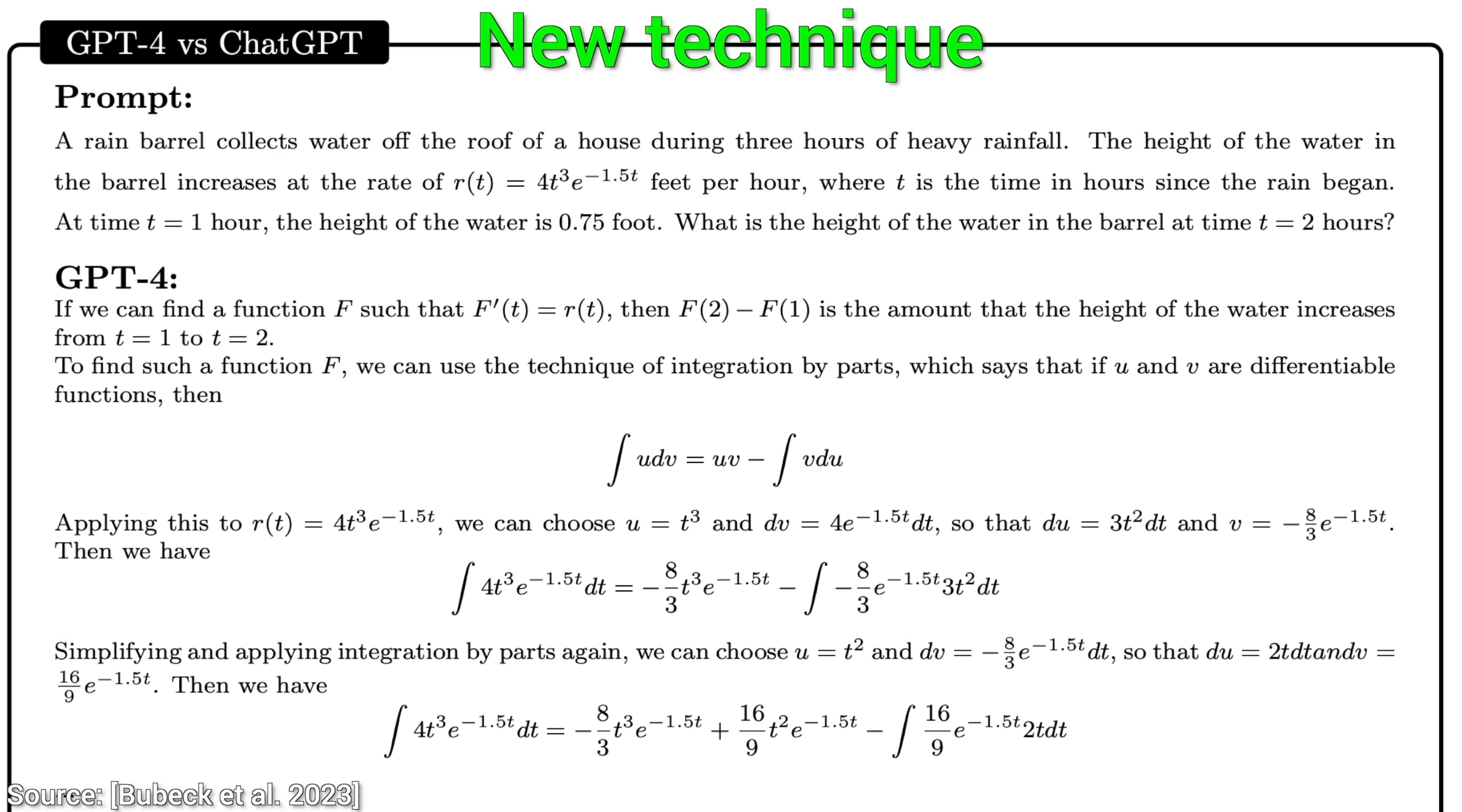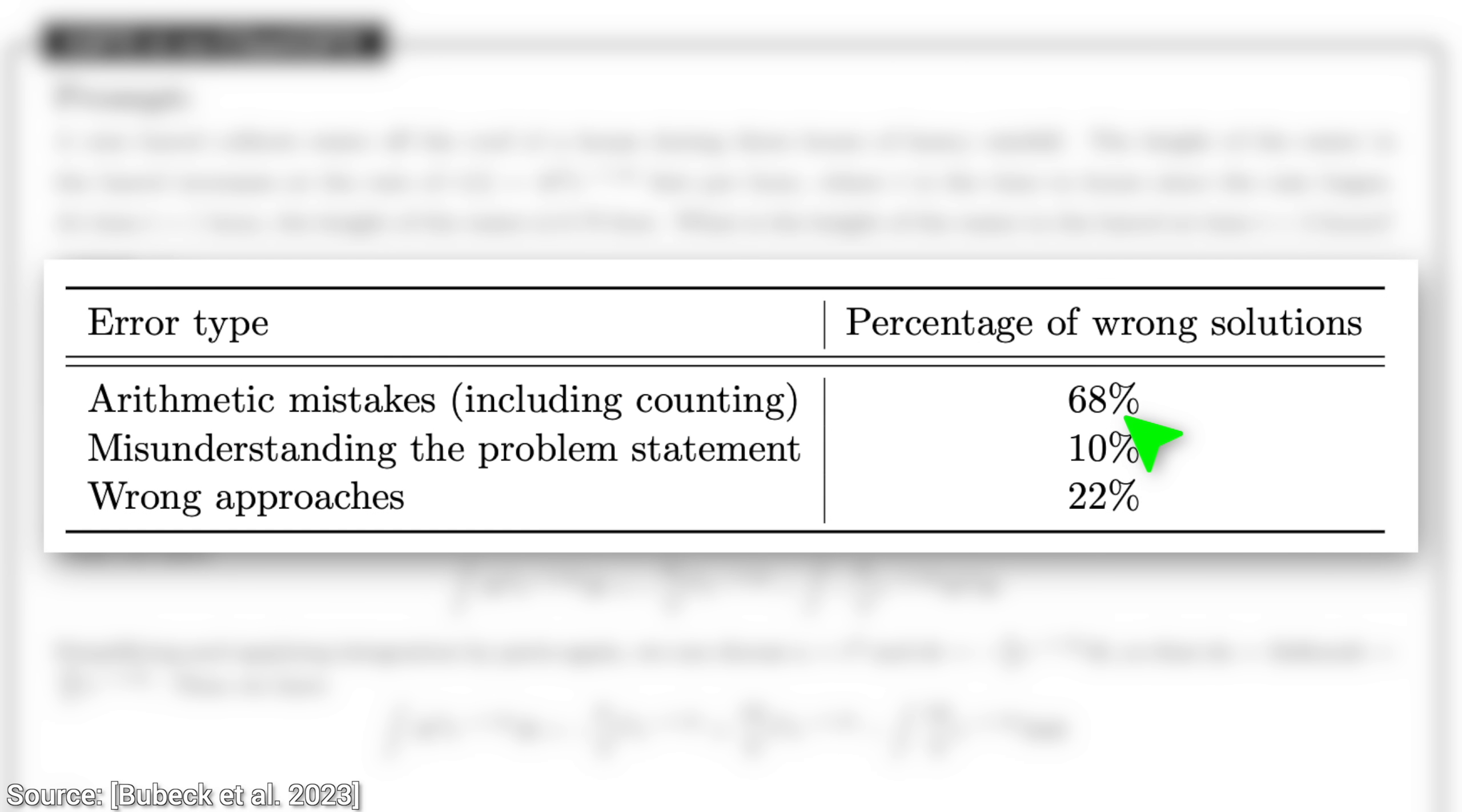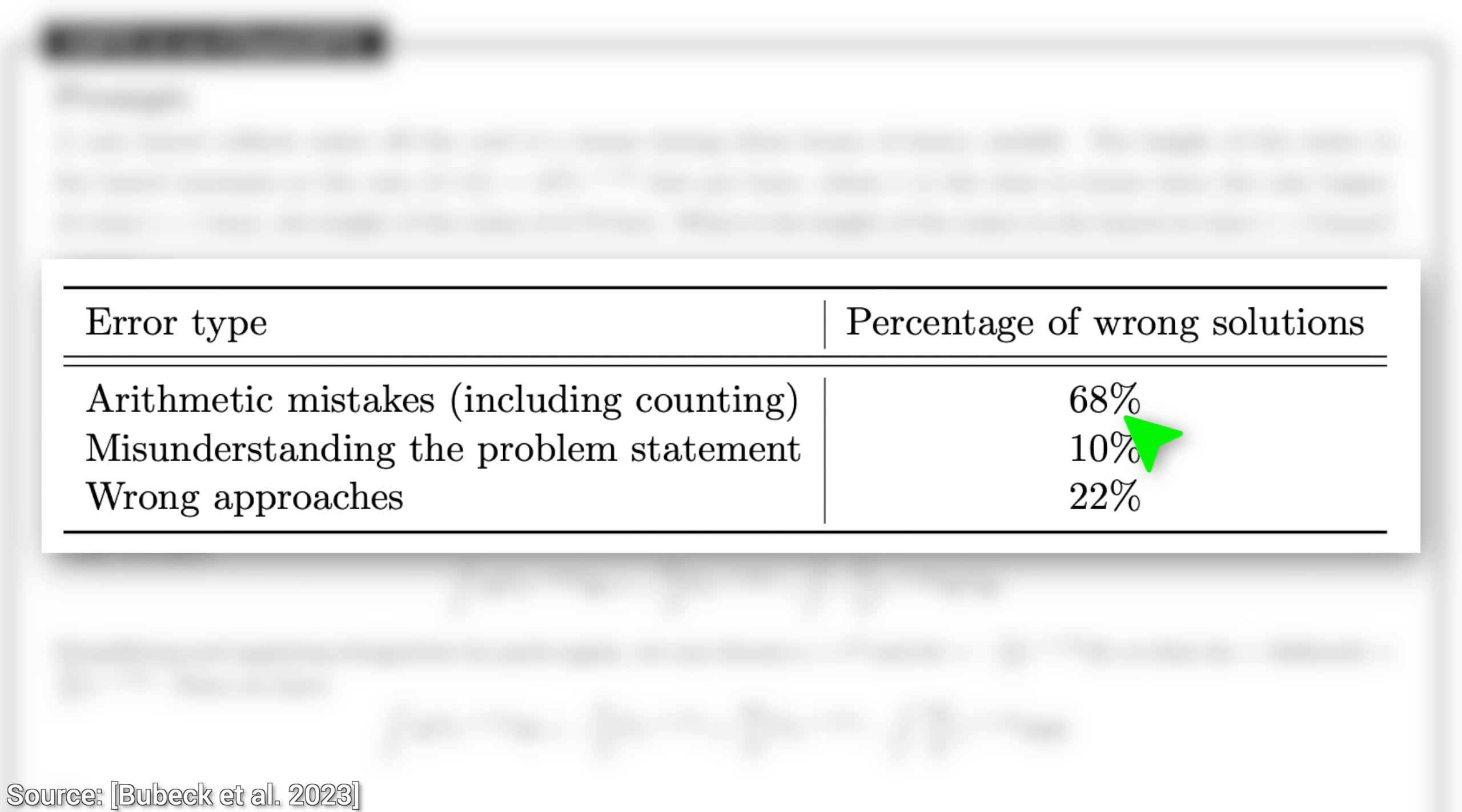And the result is that it almost nailed it. It made an arithmetic error, but other than that, it did very well. That is the perfect metaphor for the whimsical nature of AI systems we have today. They understand how to apply integration by parts in reality, which is outstanding, and then, it slips up when it needs to count up a few objects.